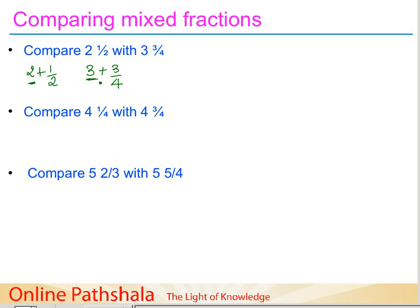For example, if somebody says they have two and a half apples and another person says they have three and three by four apples, straightforward the person who has three whole apples has more — you don't need to compare the fraction. So three and three by four is greater than two and a half.